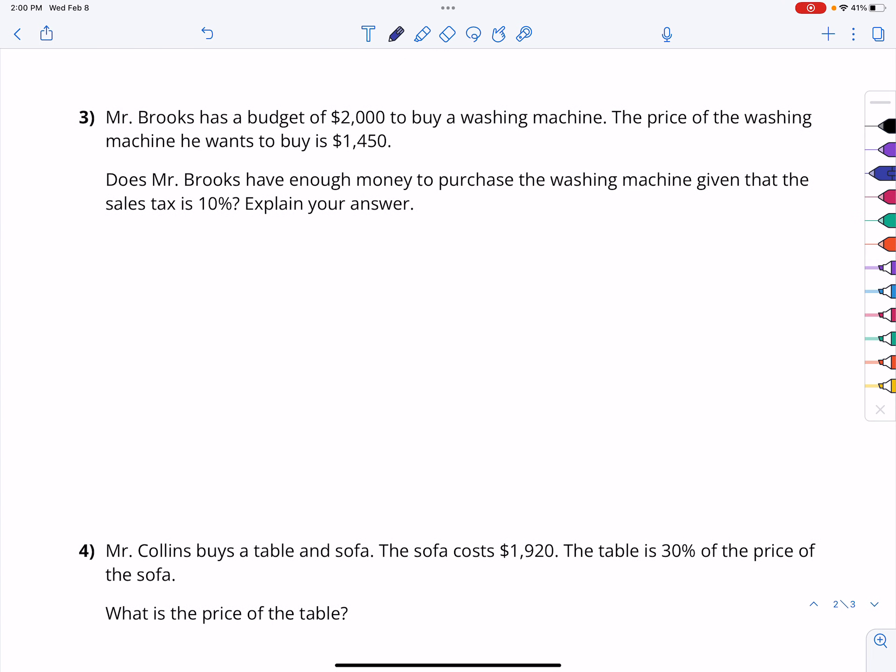Mr. Brooks has a budget of $2,000 to buy a washing machine. The price of a washing machine he wants to buy is $1,450. Does he have enough money, given that sales tax is 10%? Again, I'm going to start with a picture. Here's his washing machine. We know this washing machine has an additional tax on there. And this tax is 10% of that cost there. So, if this cost is $1,450, we need to figure out what is 10% of $1,450.